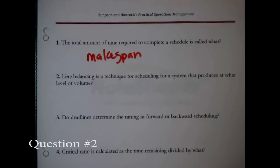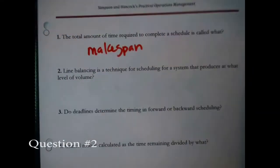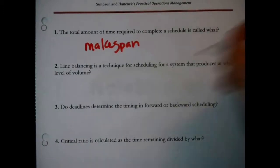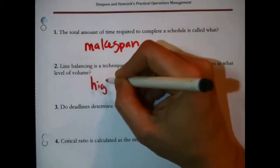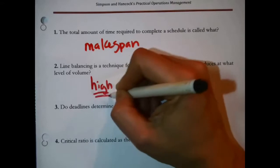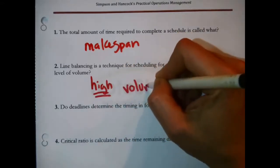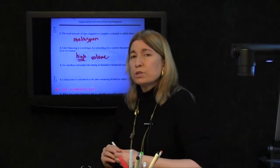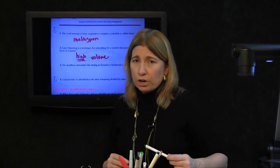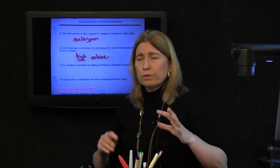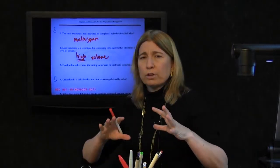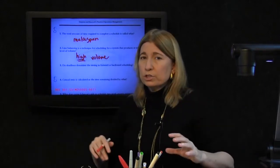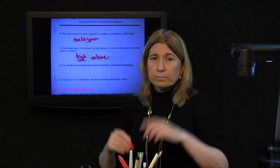Question 2: Line balancing is a technique for scheduling for a system that produces at what level of volume? Definitely high — high volume of production, presumably make to stock. That is the whole focus of line balancing: perfecting the flow in an unchanging pattern. A make to stock system.